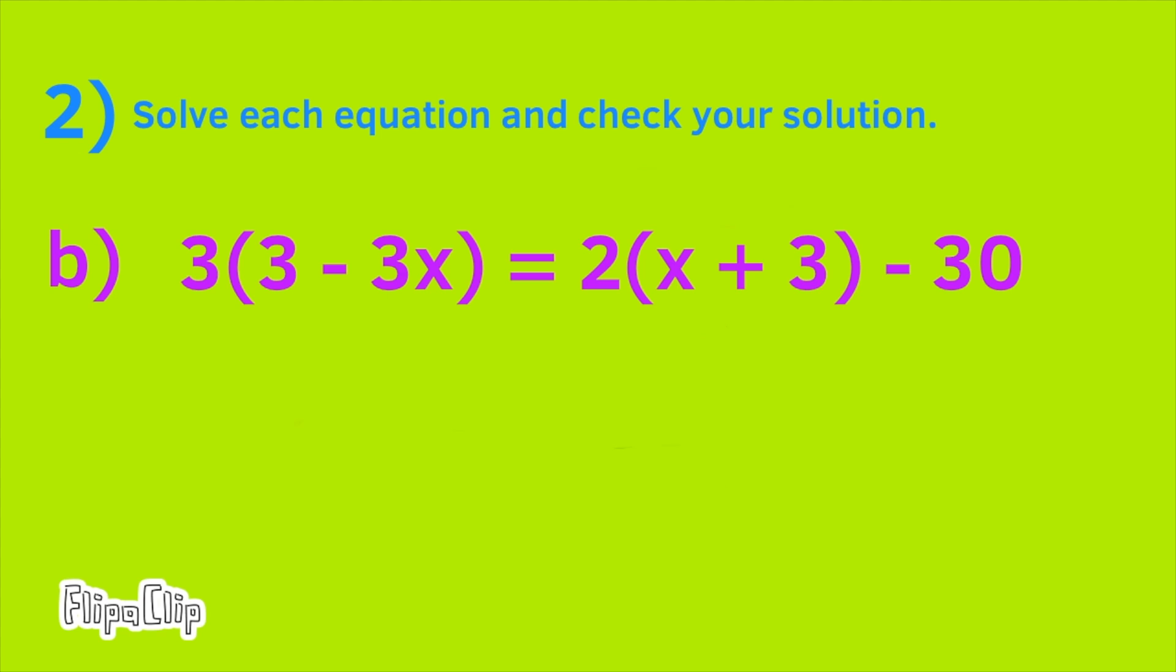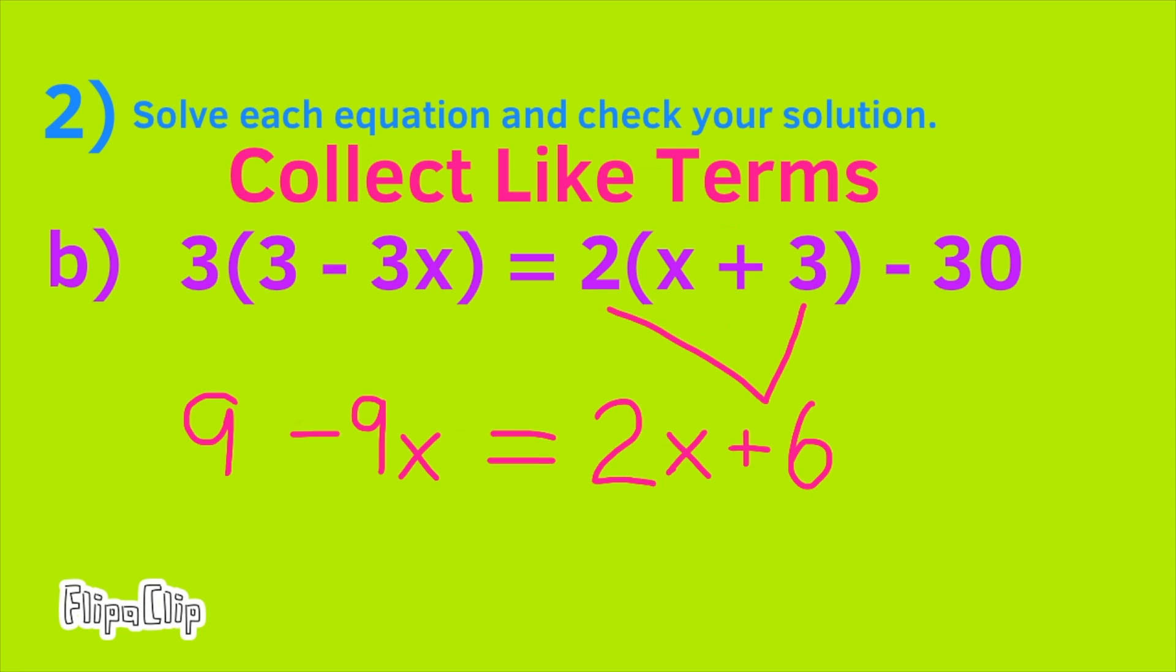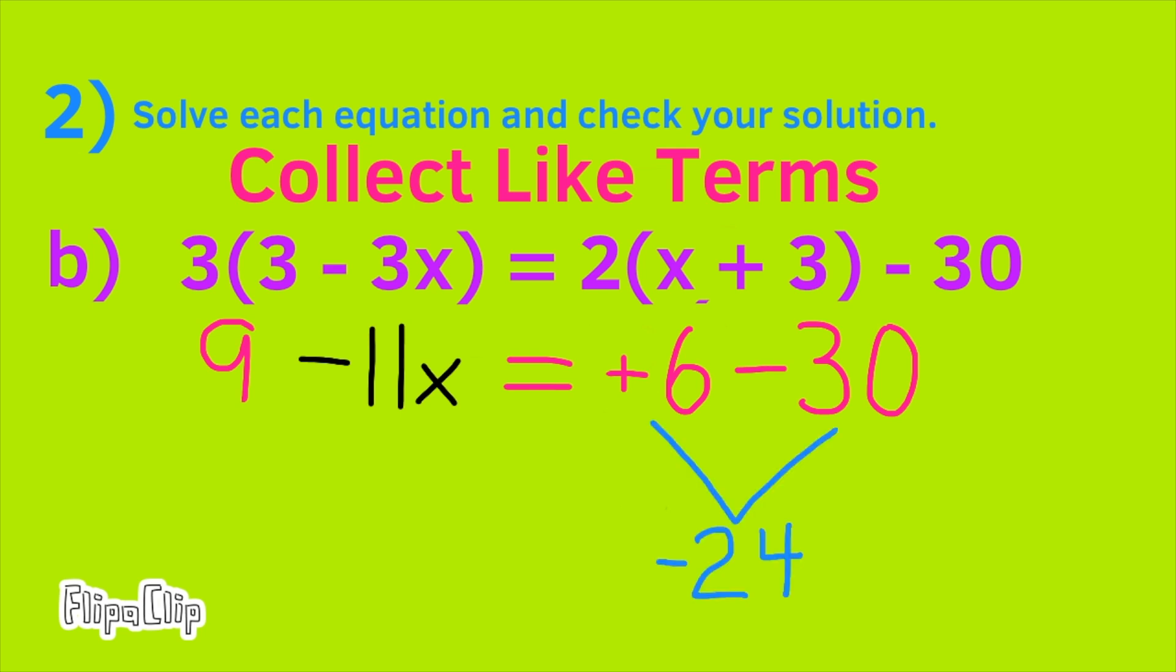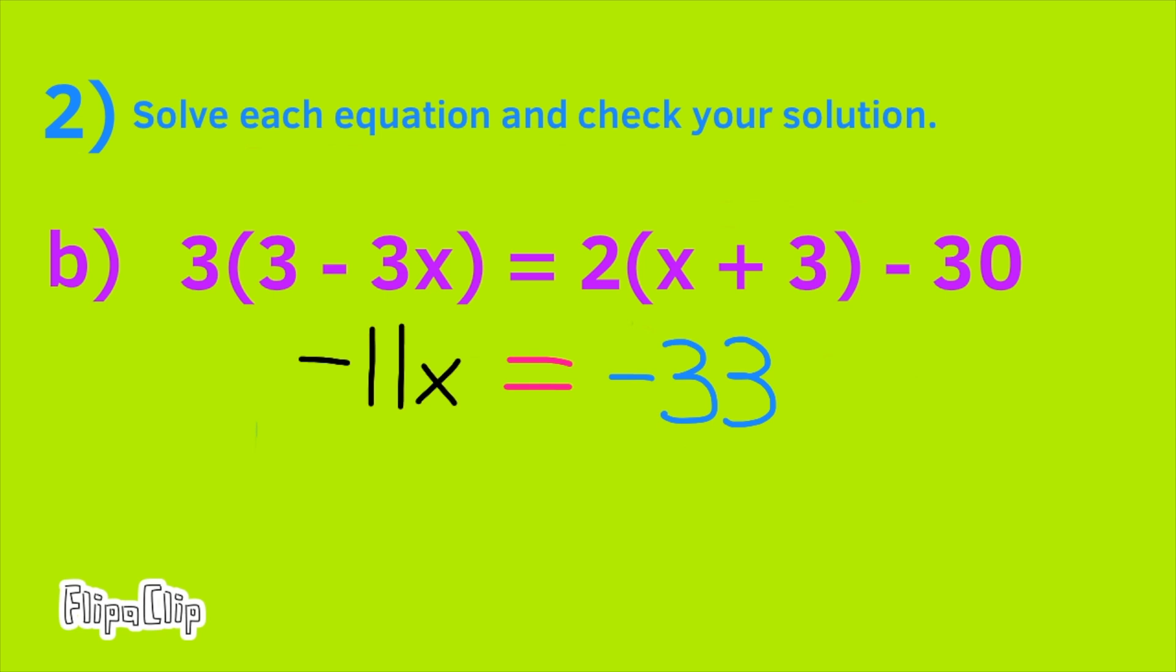B. Collect like terms. 3 times 3 minus 3 times 3X. 2 times X plus 2 times 3. Now, the equation reads 9 minus 9X equals 2X plus 6 minus 30. Subtract 2X from both sides. 6 minus 30 equals negative 24. Subtract 9 from both sides. Negative 11X equals negative 33. So, divide both sides by negative 11. And, you'll have a positive 1X or X. X equals 3.